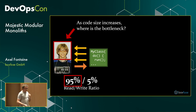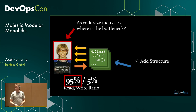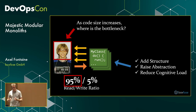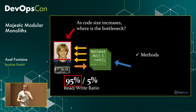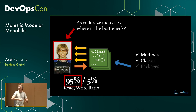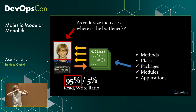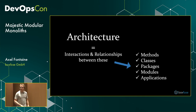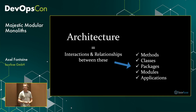The tools we have to tackle this: we can add structure to our code, raise the abstraction level of certain constructs, and reduce the cognitive load so we can wrap our head around the solution. We can see the forest through the trees by introducing methods to decompose code, grouping those into classes, bringing those into packages, and eventually introducing modules or separate services to decompose an overall solution into manageable pieces. This is nothing else than the architecture of our application.